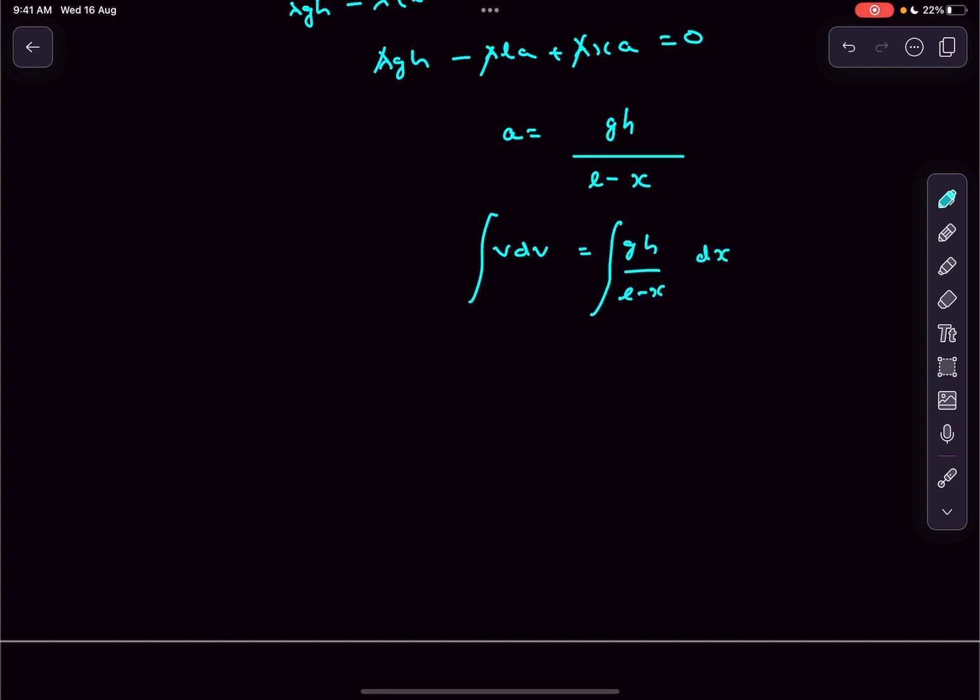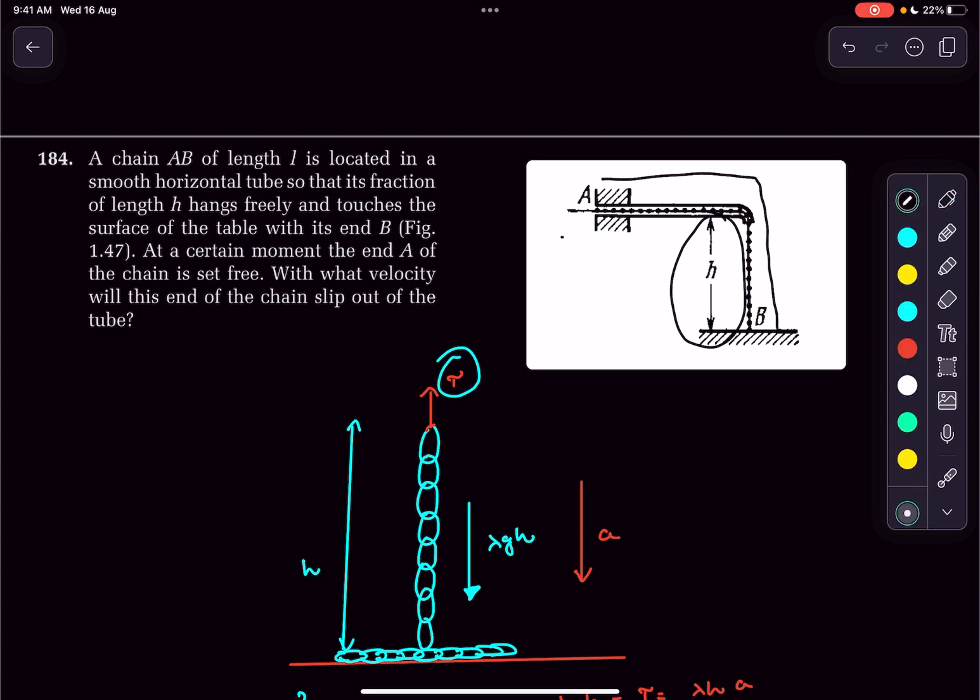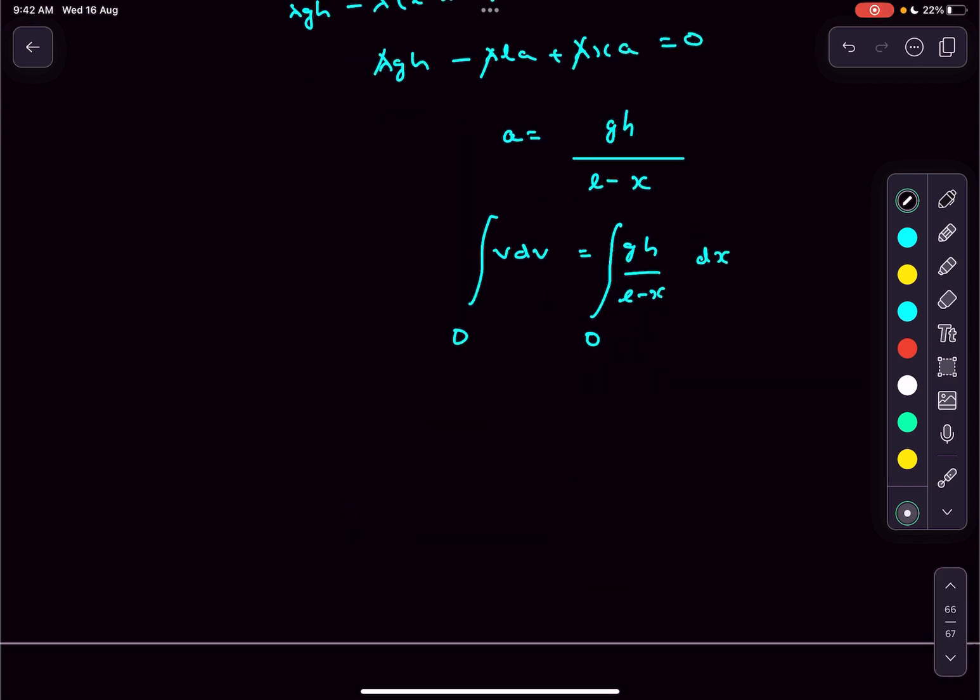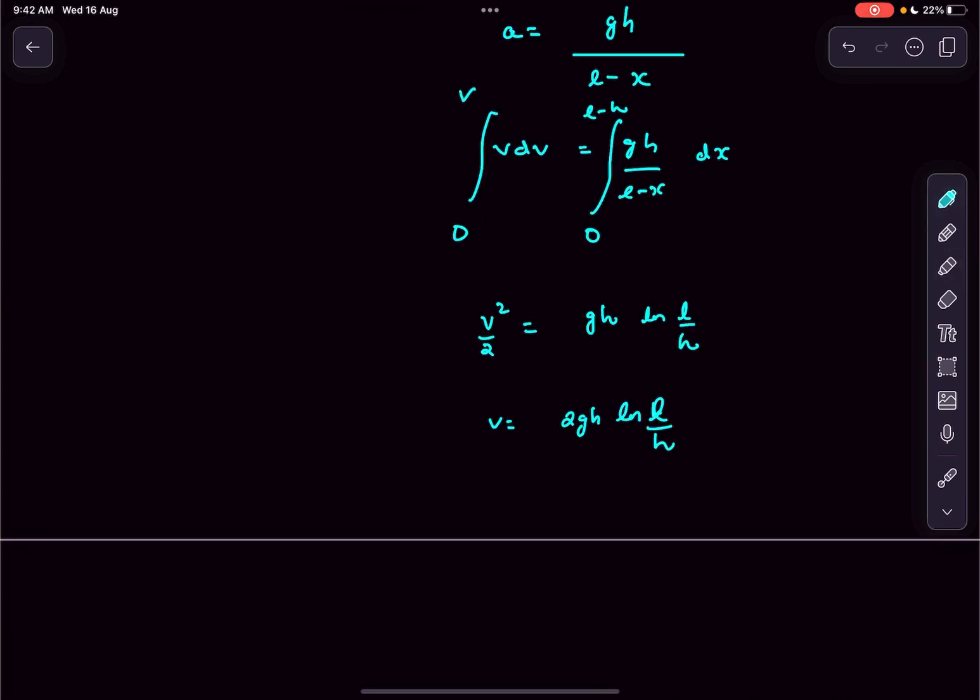Now we integrate on both sides. Initially, x = 0 and velocity is negligible. Finally, this end of the chain reaches this end, meaning x traveled is l - h. The final limits are l - h, and at that situation we want the velocity of the chain. Finally, the velocity of the chain comes out to this value.